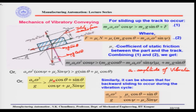For sliding up the track to occur, as we said, we have this force diagram. In this force diagram, as you remember, we said that this is the total inertia force, which is MP — mass of the part — times A0 omega squared. A0 is the amplitude of vibration and omega is the angular frequency. This total inertia force can be resolved into two components. One component is along the track, which is MP·A0·omega²·cos(ψ), where ψ is the angle between the total inertia force and the line of the track.